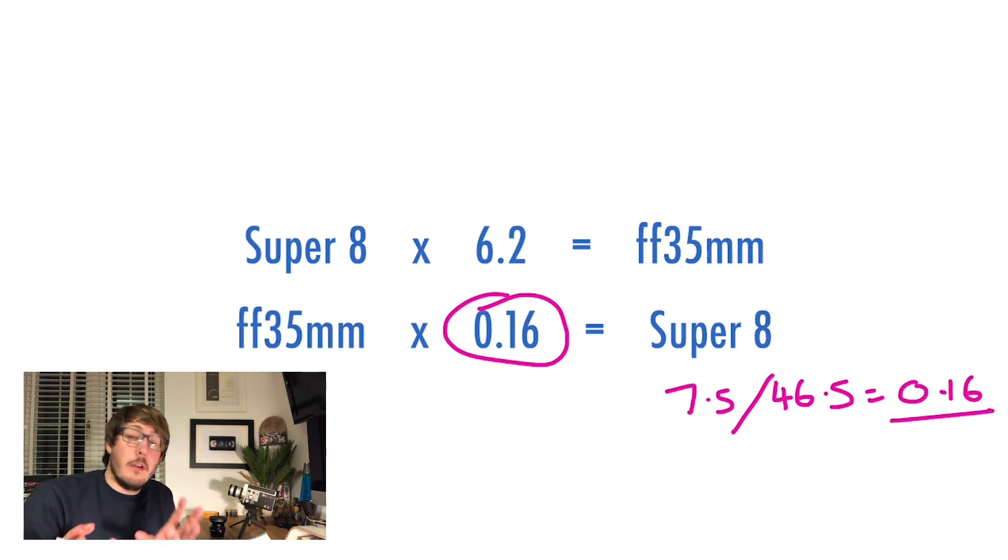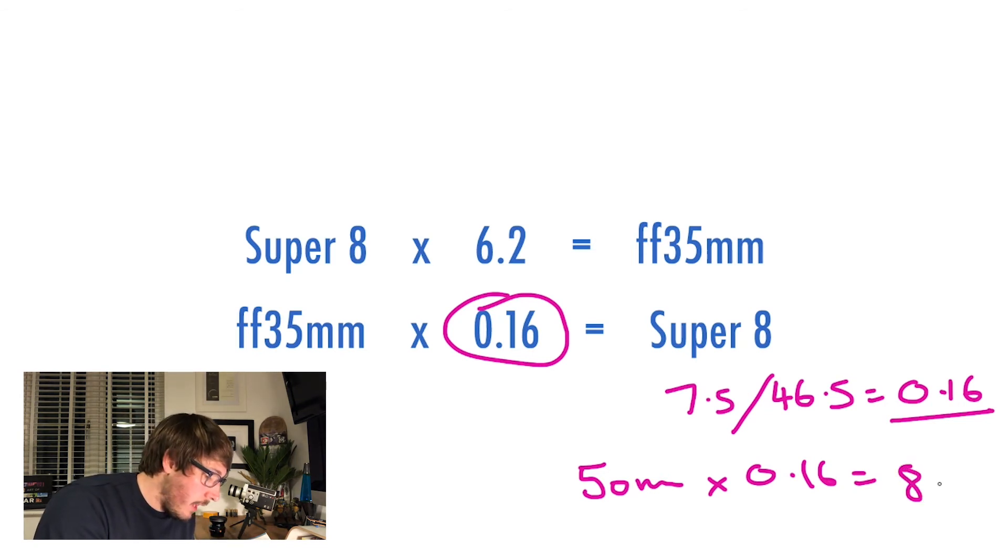That means I can take any full frame 35 sensor lens, times that by 0.16, and it will tell me what I need to set my Super 8 camera. An example: if I want a 50mm lens and I times that by 0.16, that tells me I need to set my Super 8 camera at 8 millimeters. Really helpful.